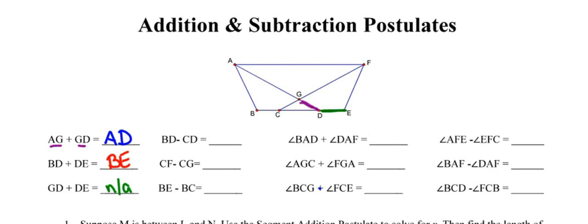The next few have to do with subtraction, and they all work very similarly, with the idea being that all three points have to be on the same straight line, or that one point has to lie between the other two. The next one says: if we take segment BD, represented by the green segment, and subtract out the piece represented by CD, what piece are we left with? That's piece BC.